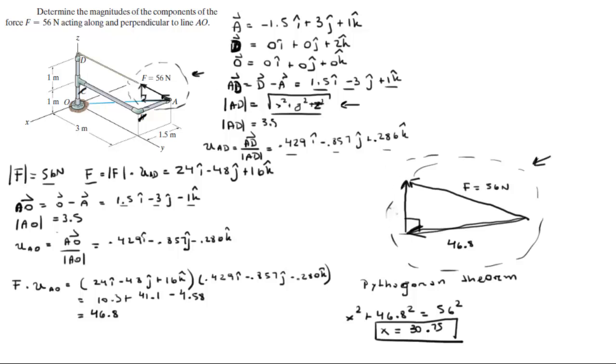So this is 30.75. 30.75 is the perpendicular component of F in regards of AO and 46.8 is the parallel component that goes along AO of the force which is 56N. Final answer.